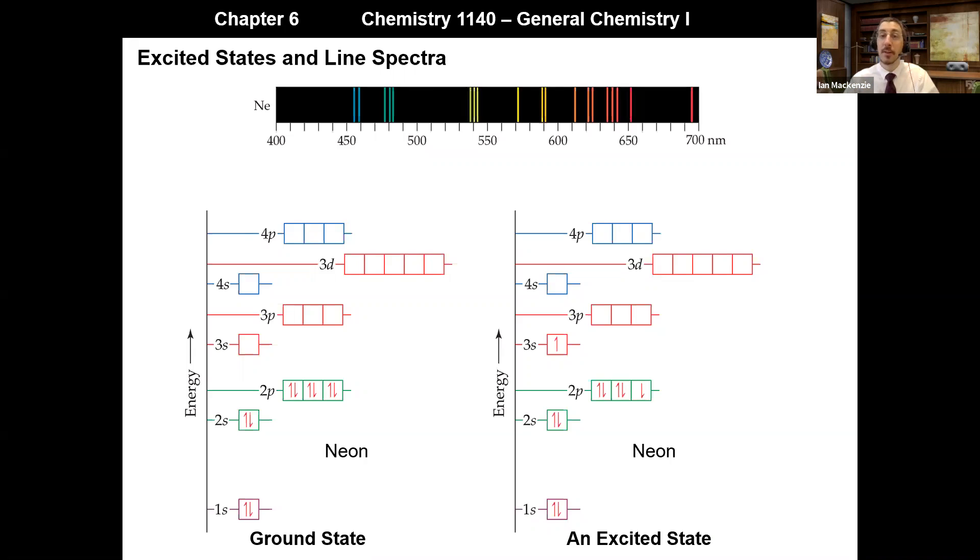Now there's many possible excited states. We didn't need to promote this electron to the 3s orbital. We could have promoted it all the way up to the 4p orbitals or even higher. And when it comes down, it doesn't necessarily have to come straight down to the place where it came from. It could then jump sequentially down from the 4p down to the 3d and then down to the 4s and then down to the 3p and then down to the 3s and then finally down to the 2p again.